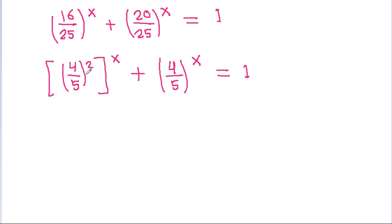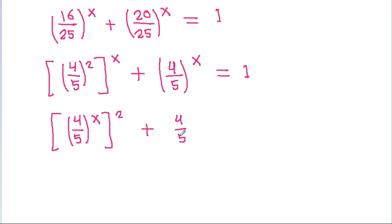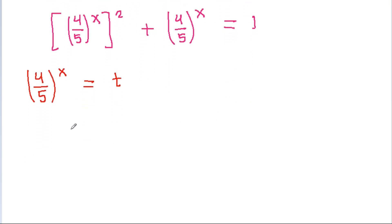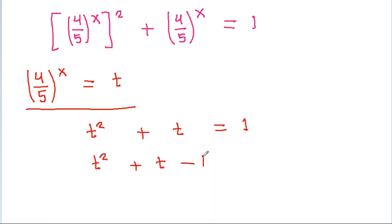So 4 by 5 squared power x will be equal to 4 by 5 power x squared. With 4 by 5 power x squared plus 4 by 5 power x equal to 1, if we take 4 by 5 power x equal to t, then we will get t squared plus t equal to 1, so t squared plus t minus 1 will be equal to 0.